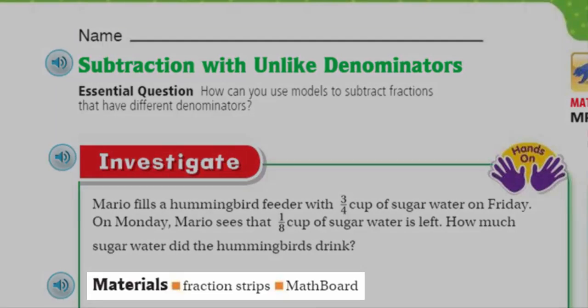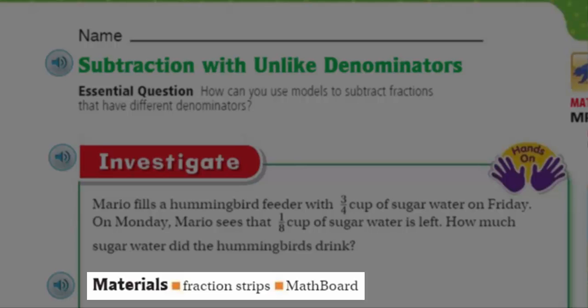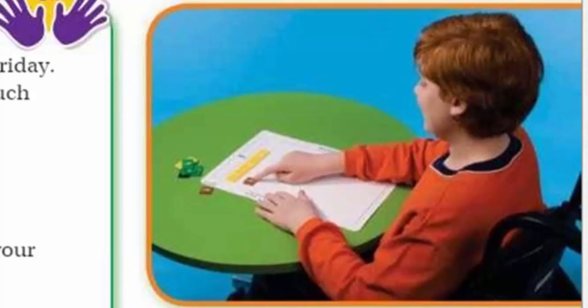On Monday, Mario sees that one-eighth cup of sugar water is left. How much sugar water did the hummingbirds drink? Very cool. I have a hummingbird feeder myself. This is a real world problem. Now look further, our materials. It says that we're going to need fraction strips and then your math board, in fact just what this young gentleman right here has.